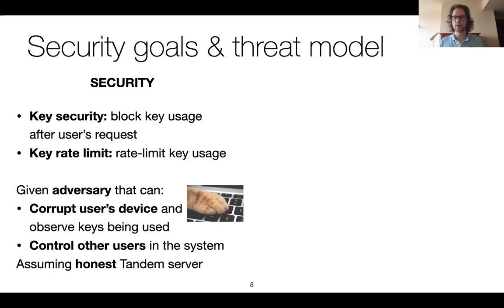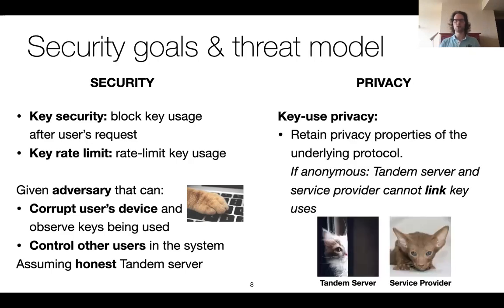Because this tandem server has many users, an attacker should also be assumed to be able to control several. These security properties only make sense if the tandem server is honest. But as a side note, because of the properties of the threshold cryptographic protocol itself, as long as the user's device is not compromised, the tandem server cannot do anything bad — it can't use the keys because it doesn't have the other key share on the user's device. For privacy, we would like to retain the privacy properties of the underlying protocol even if the tandem server is malicious. So if the use of an anonymous credential is anonymous with respect to the service provider, this anonymity is maintained despite using a tandem server.